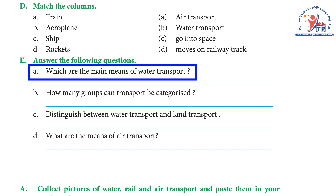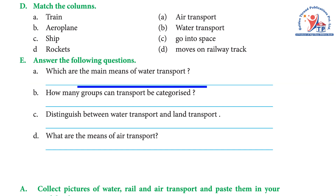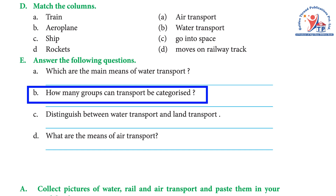Exercise E: Answer the following questions. A) Which are the main means of water transport? Answer: the main means of water transport are boat, ship, cruise, and liner. B) How many groups can transport be categorized into? Answer: transport can be categorized into three groups — water, land, and air.